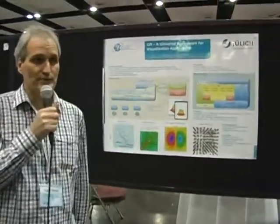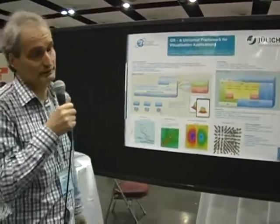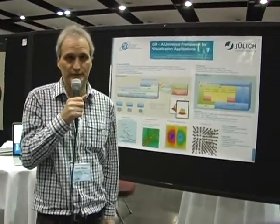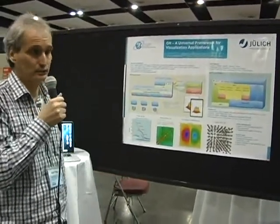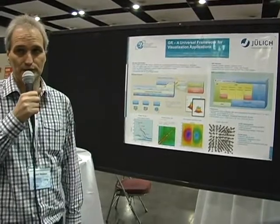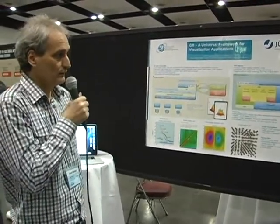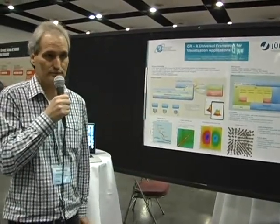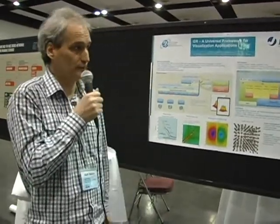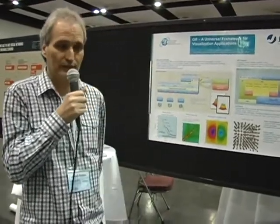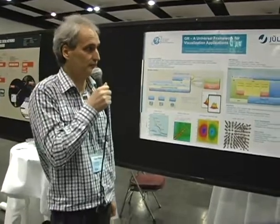My name is Joseph Hein. I'm the head of the team Scientific IT Systems at Peter Grunberg Institute in Germany. It's part of the research center ULIS and we provide hard and software services for our scientists.